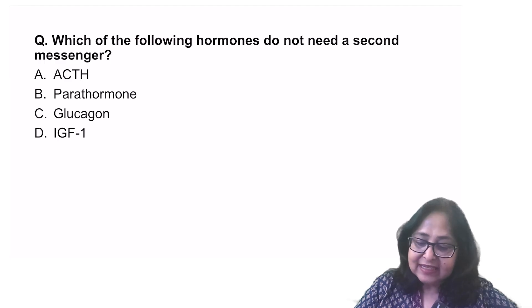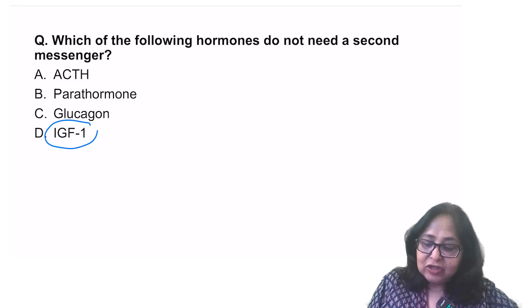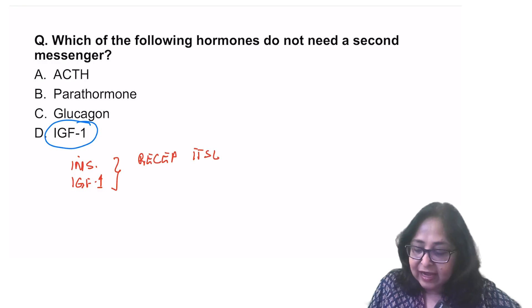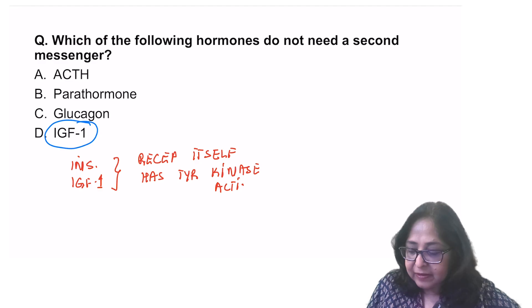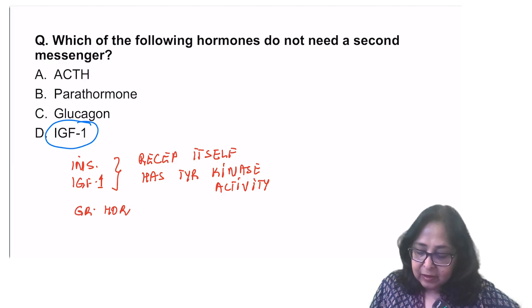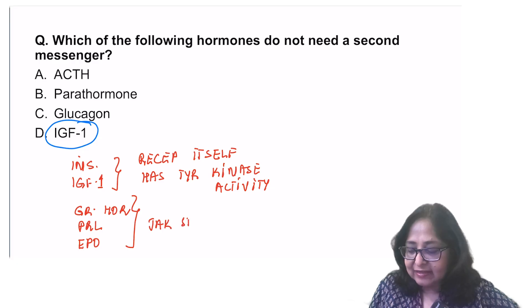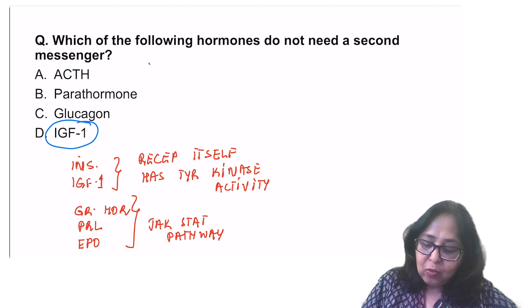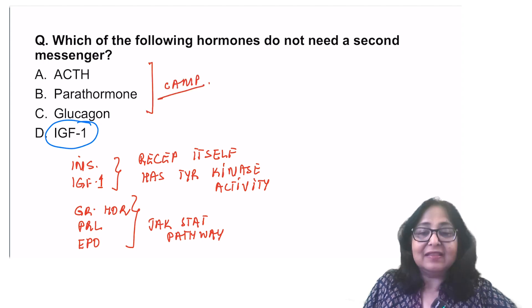Which of the following hormones does not need a second messenger? The only one which does not need a second messenger is IGF-1. Now insulin and IGF-1 do not need a second messenger. The reason is because their receptors itself has tyrosine kinase activity. Other hormones which do not require a second messenger are growth hormone, prolactin, erythropoietin. These act via the JAK-STAT pathway. So they also do not need a second messenger. ACTH, parathormone, glucagon, they use cyclic AMP as the second messenger. So the answer here is IGF-1.